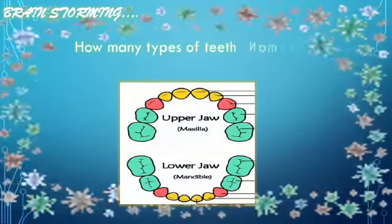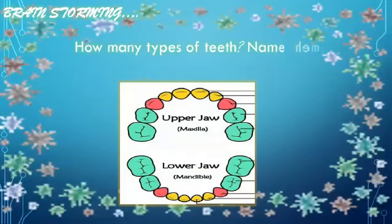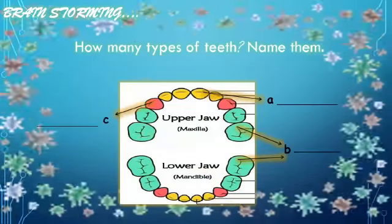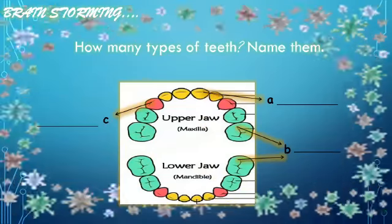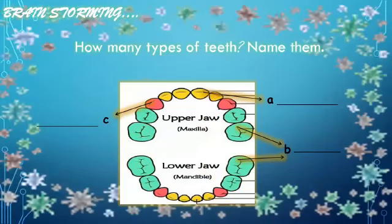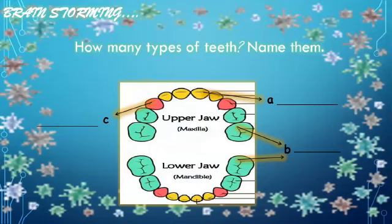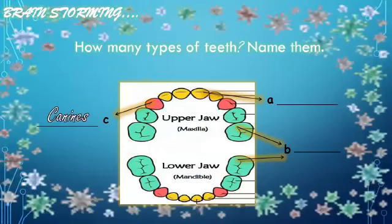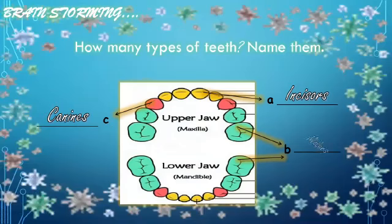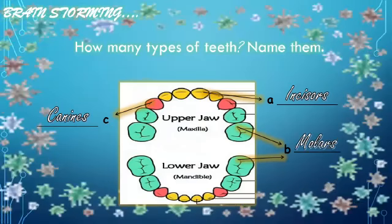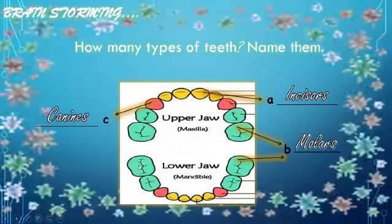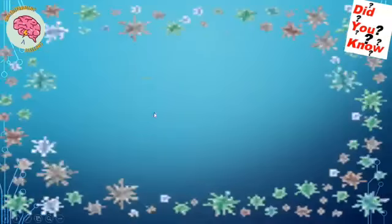How many types of teeth are there? Name them. Actually there are four types of teeth: incisors, canines, molars, and pre-molars.